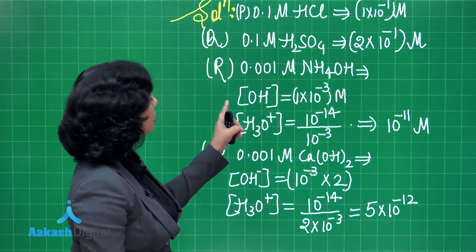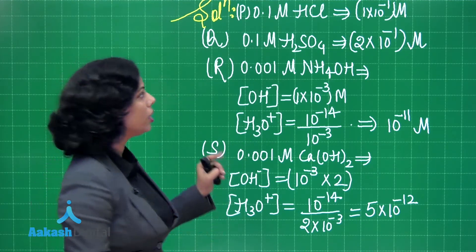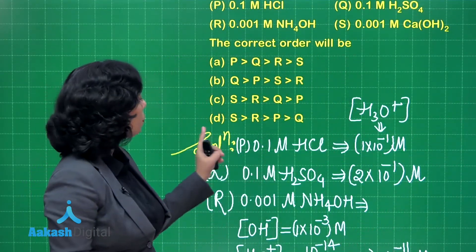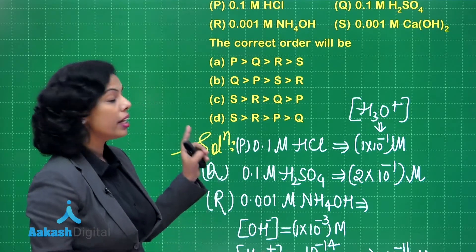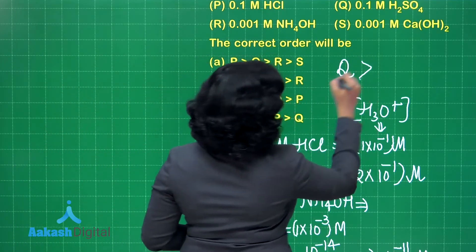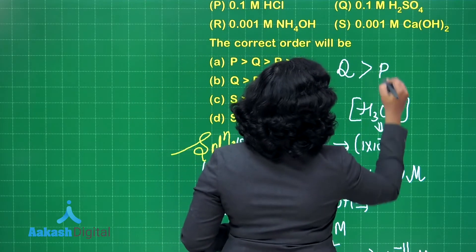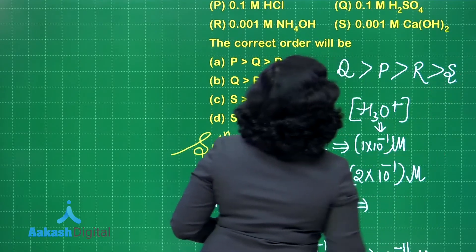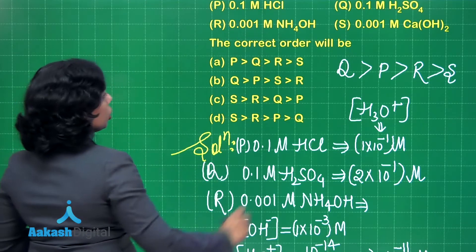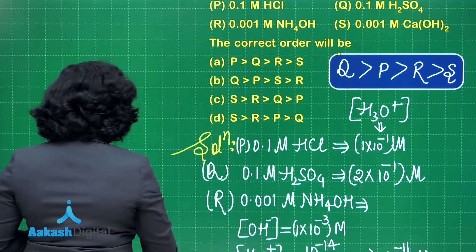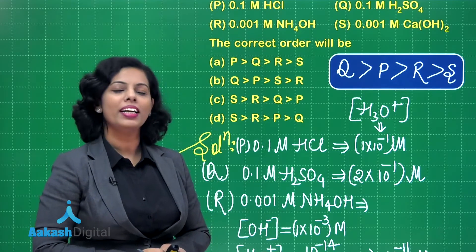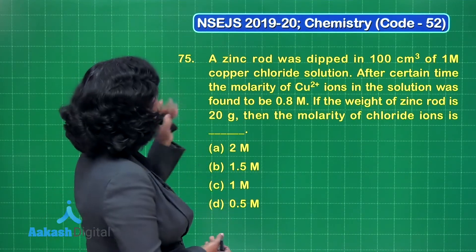In increasing order of hydronium ion concentration: S (0.001 M Ca(OH)2) < R (0.001 M NH4OH) < P (0.1 M HCl) < Q (0.1 M H2SO4). However, checking the given options, this order does not appear to be listed among them, so no option is correct for this question.